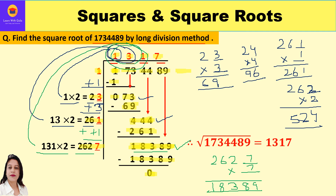There are no more periods left and the remainder is 0, so we stop. The final quotient is 1317, which is the square root of 1734489. An important point to note: there were four periods — 1, 73, 44, and 89 — and the square root also has four digits. The number of digits in the square root always equals the number of periods formed while making the pairs.